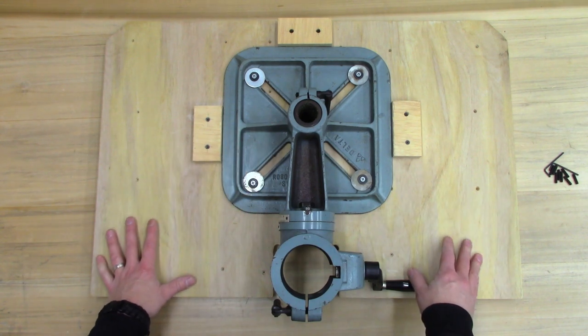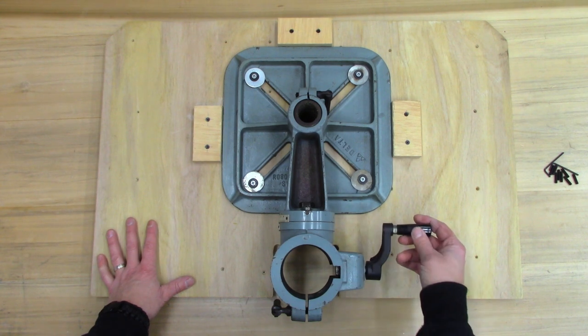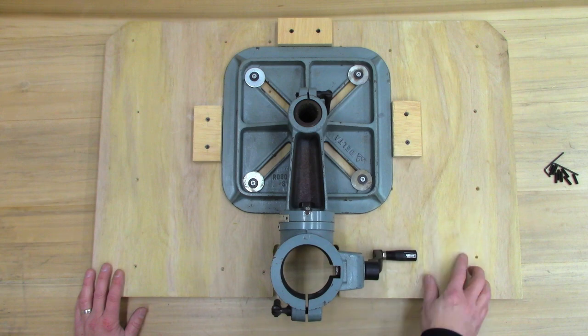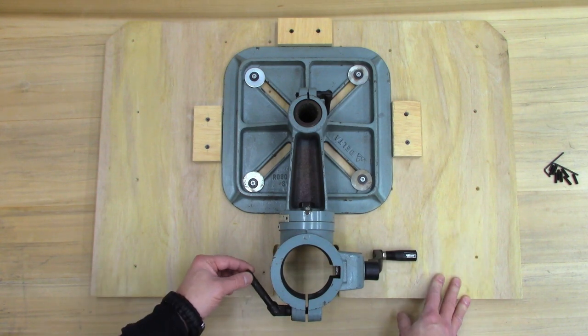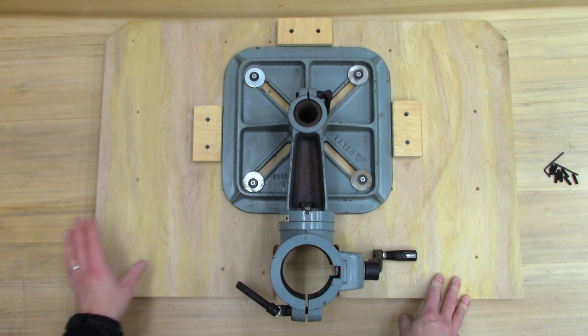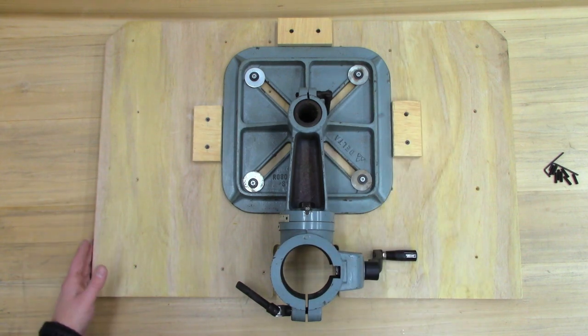I want to continue working with it like this because this handle here is what raises and lowers the bench. I'm going to reroute it so I can work it from the front of the table. This handle here is the one that locks it on the post. I don't want to have to reach around the back. I'm going to relocate this somehow off onto the side. So I'll have one handle up there and one on the side.